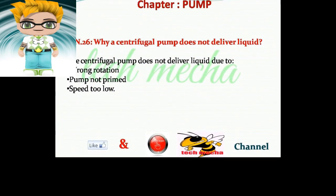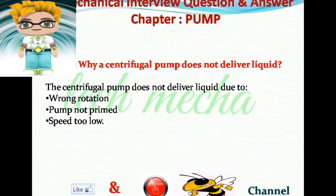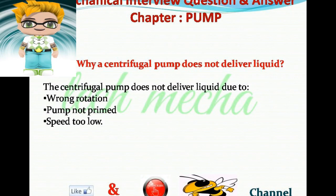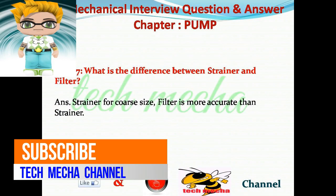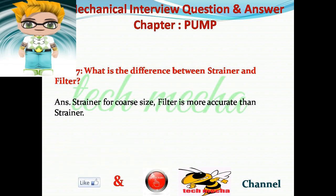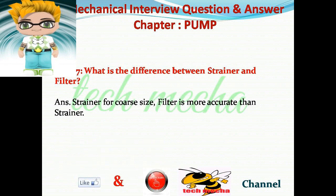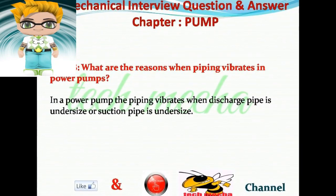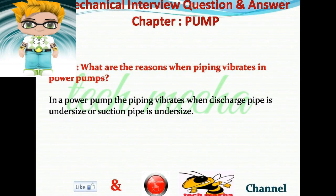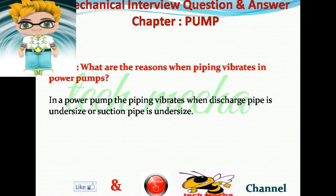Question number 26: Why does a centrifugal pump not deliver liquid? Answer: The centrifugal pump does not deliver liquid due to wrong rotation, pump not primed, or speed too low. Question number 27: What is the difference between a strainer and a filter? Answer: A strainer handles coarser sizes; a filter is more accurate than a strainer. Question number 28: What are the reasons when piping vibrates in power pumps? Answer: In a power pump, piping vibrates when the discharge pipe or suction pipe is undersized.